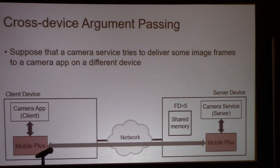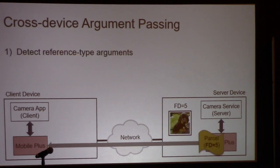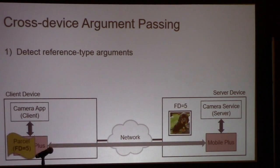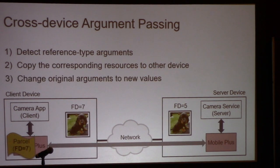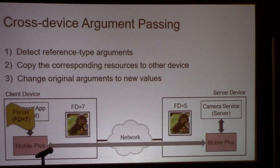Suppose a camera service tries to deliver some image frames to a camera application on a different device by using shared memory. First, the service will send a transaction which has the file descriptor of its shared memory, number 5. But there is also shared memory on the client side. So the hub will intercept these arguments and copy the corresponding image frames to the shared memory on the client side. Then the hub will change the original argument into the file descriptor number 7. After that, the camera application can access the image frame through this argument correctly. We handle different reference type values in a similar way.